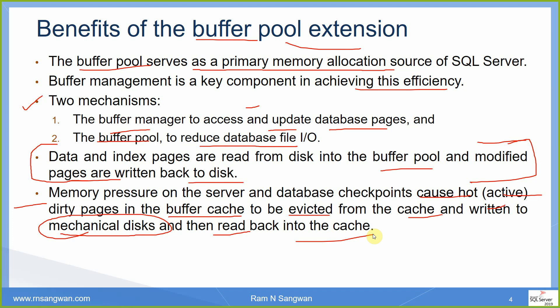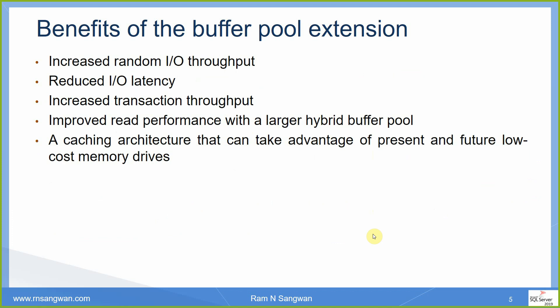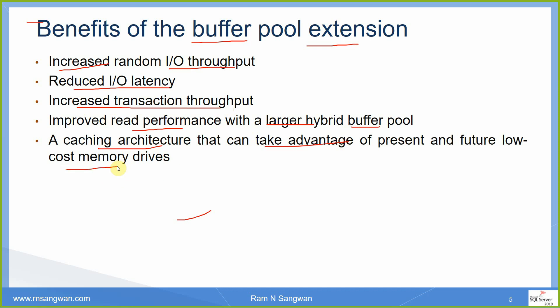A mechanical disk has platters revolving, mounted on a spindle, with heads moving to read the data. With buffer pool extension enabled on an SSD, the benefits include: increased random IO throughput, reduced IO latency, increased transaction throughput, and improved read performance with a larger hybrid buffer pool and caching architecture that can take advantage of present and future low-cost memory drives.